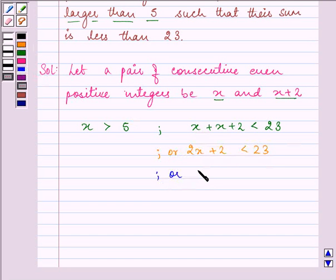Further, on subtracting 2 from both the side, we have 2x plus 2 minus 2 is less than 23 minus 2. They both will get cancelled out with each other. 2x is less than 21.